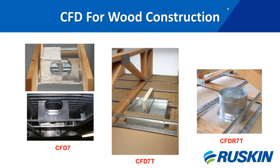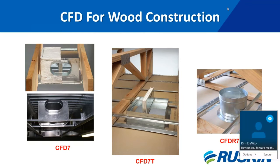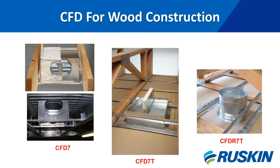For wood construction, the CFD 7 is a rectangular damper designed to be installed in either 2x10 or 2x12 solid wood joists. The CFD 7 is also UL listed for use in steel channel joist assemblies. Additionally, the CFD 7 is designed to be installed in wood open-web trusses. The CFD RT is the same open-web truss type damper but a true round ceiling radiation damper for wood construction.